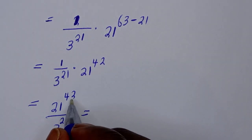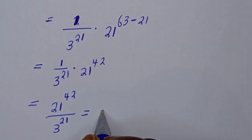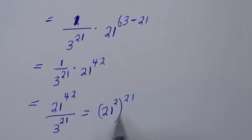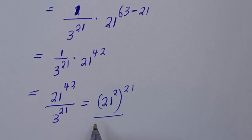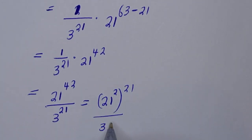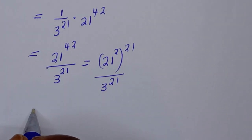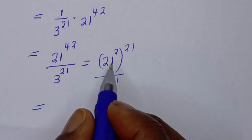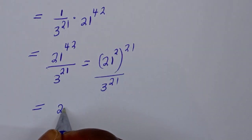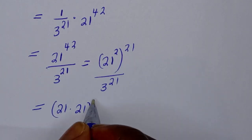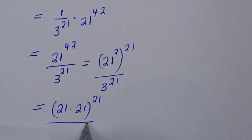This is equal to 21 raised to power 42 over 3 raised to power 21. Now 21 raised to power 42 can be written as 21 raised to power 21, multiplied by 21 raised to power 21, which equals 21 squared — that is 21 multiplied by 21 — to the power of 21, divided by 3 raised to power 21.